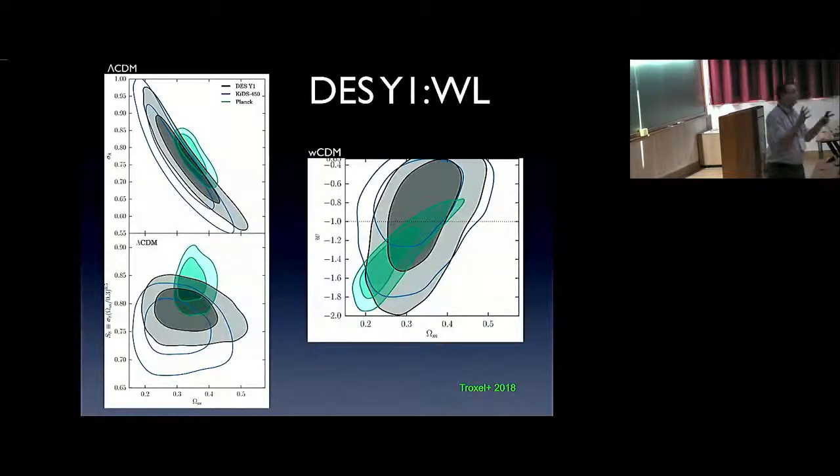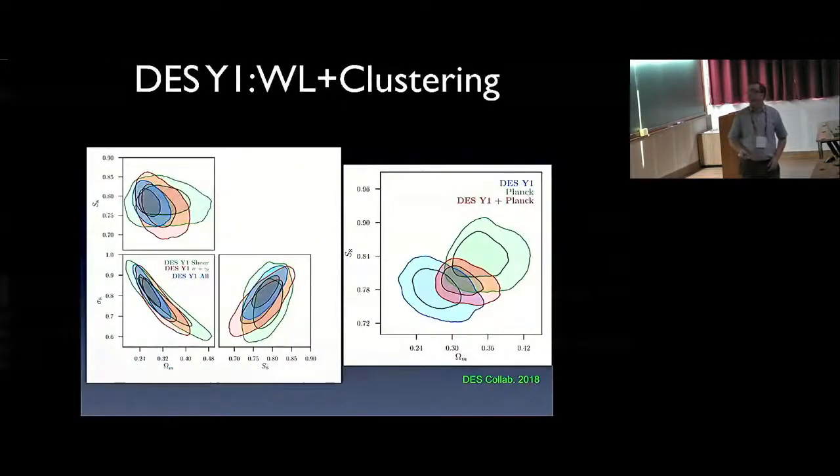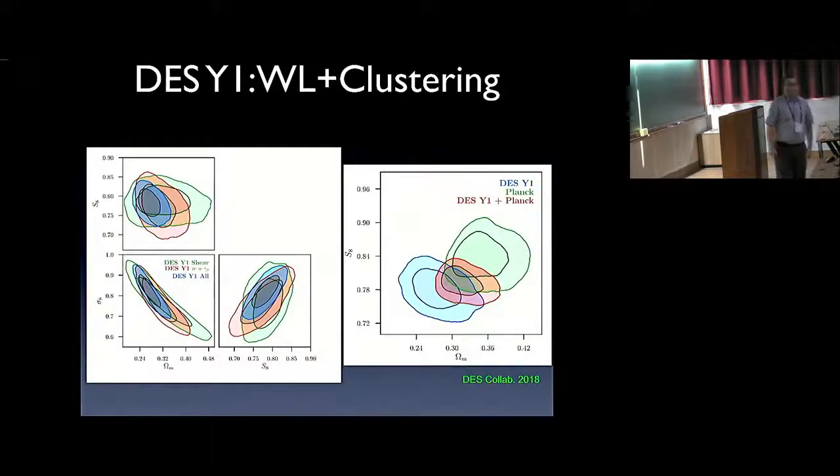This is using weak lensing only. Then one can start using more and more information. An important one is to use weak lensing and clustering. We use not only the weak lensing map, but we can also look at the density fluctuations of the number of galaxies as a tracer of visible matter. Then, we can combine this information together.